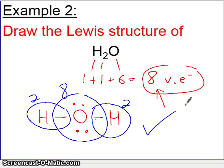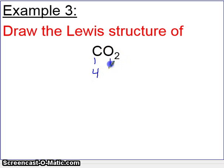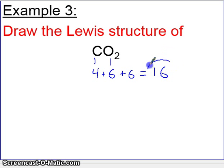Let's show you one that requires double or triple bonds — this will be the last example. We're asked to draw the Lewis structure of CO2. Let's count up the total valence electrons: carbon brings four, each oxygen brings six, and we have two oxygens, for a total of 16 valence electrons to distribute.